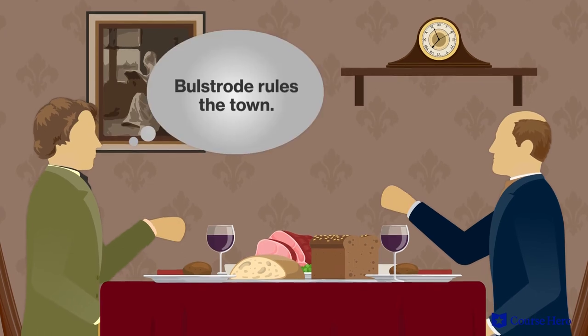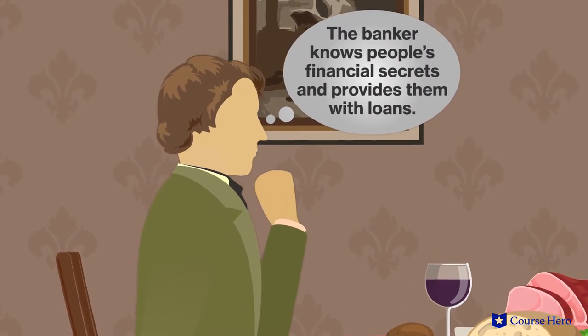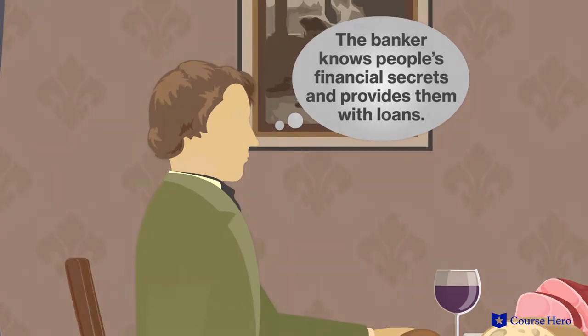In Book 2, Old and Young, Chapter 16 of Middlemarch, the subject of the chaplaincy is a hot topic of conversation at the Vincys when Lydgate comes for dinner. He begins to realize that Bolstrode rules the town. The banker's power derives from knowing people's financial secrets and providing them with personal loans.